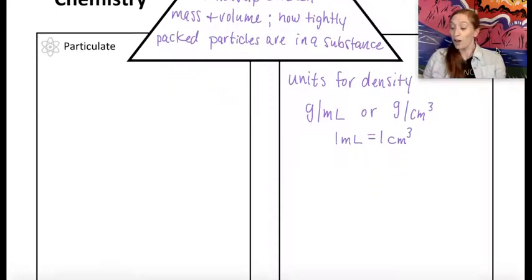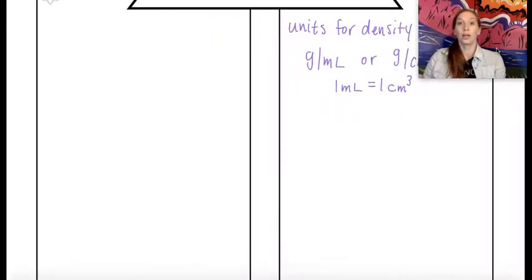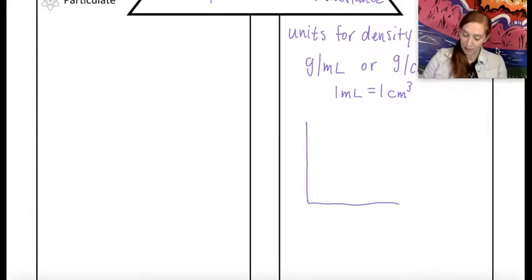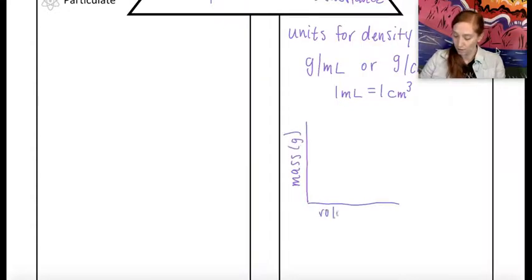So from our lab, we're going to include a sketch of the graph that we had in lab three. So we're going to have an x and a y axis. We're going to have mass in grams on the y axis. We're going to have volume, either centimeters cubed or milliliters, doesn't matter. I'm going to leave a blank for now, but we're going to show the slope of a line.